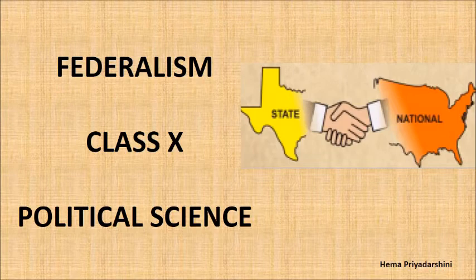In the previous chapter, that is Power Sharing, we noted that vertical division of power among different levels of government is one of the major forms of power sharing in modern democracies. In this chapter, we will focus on this form of power sharing, commonly referred to as Federalism.